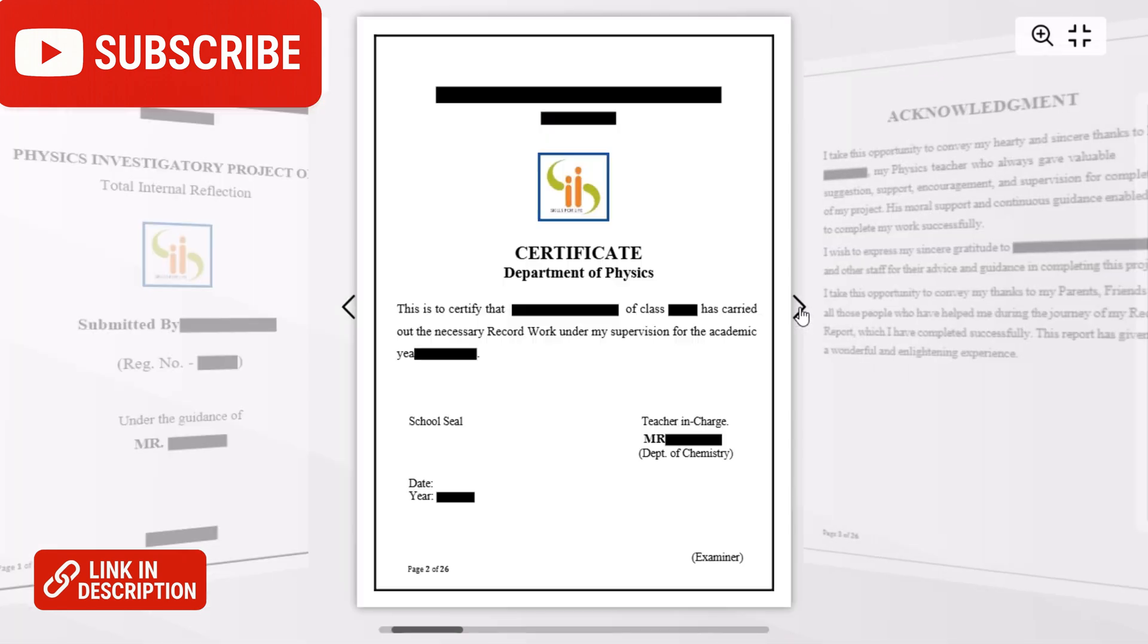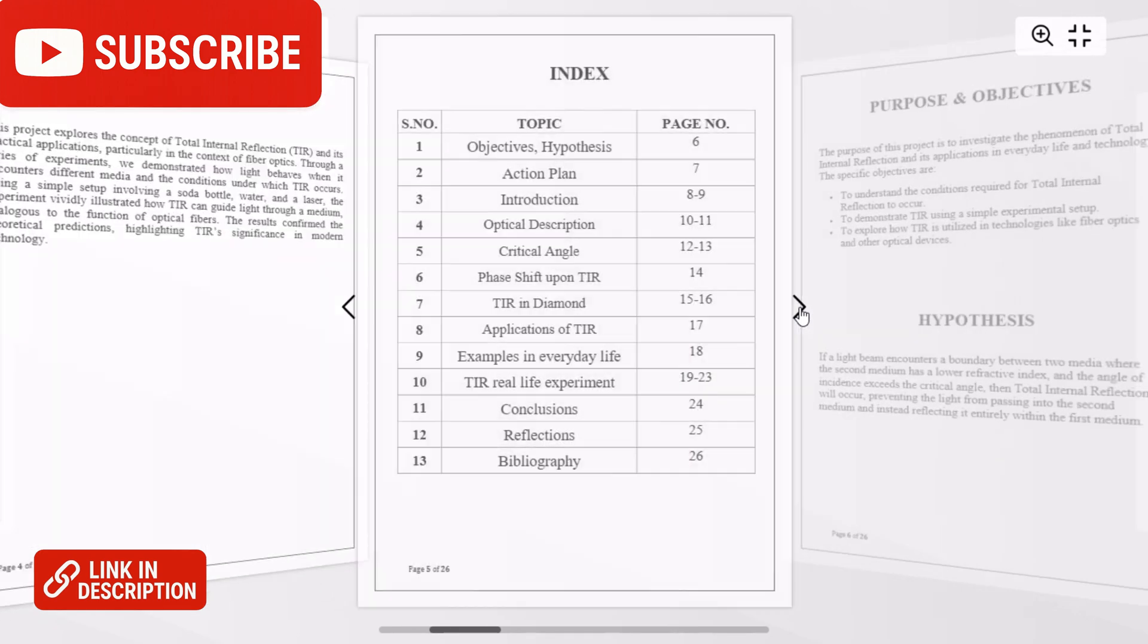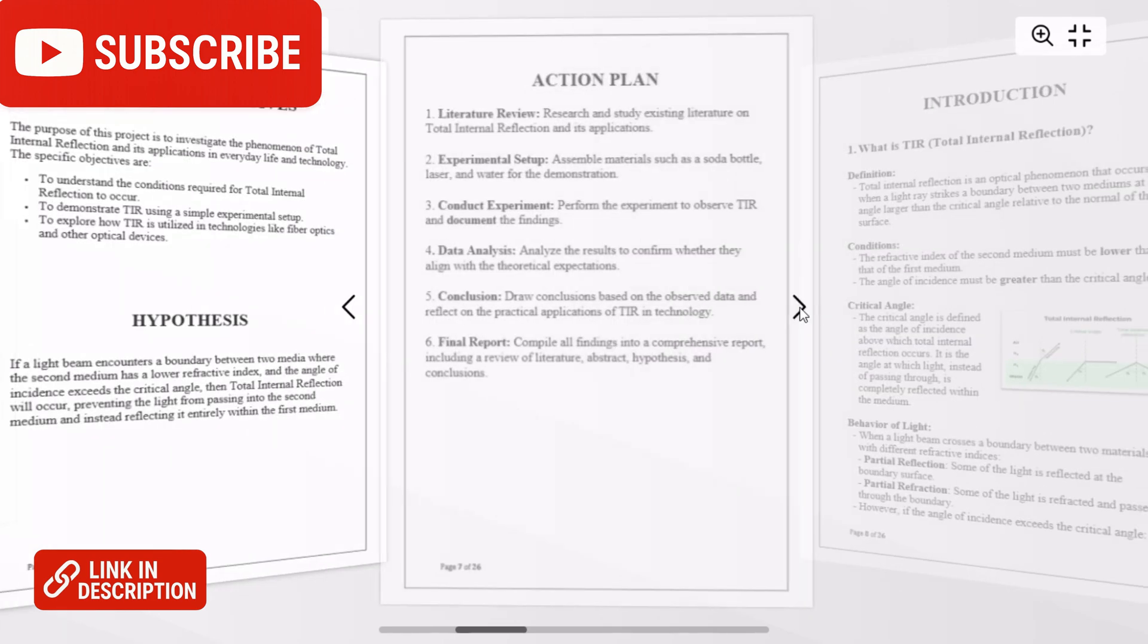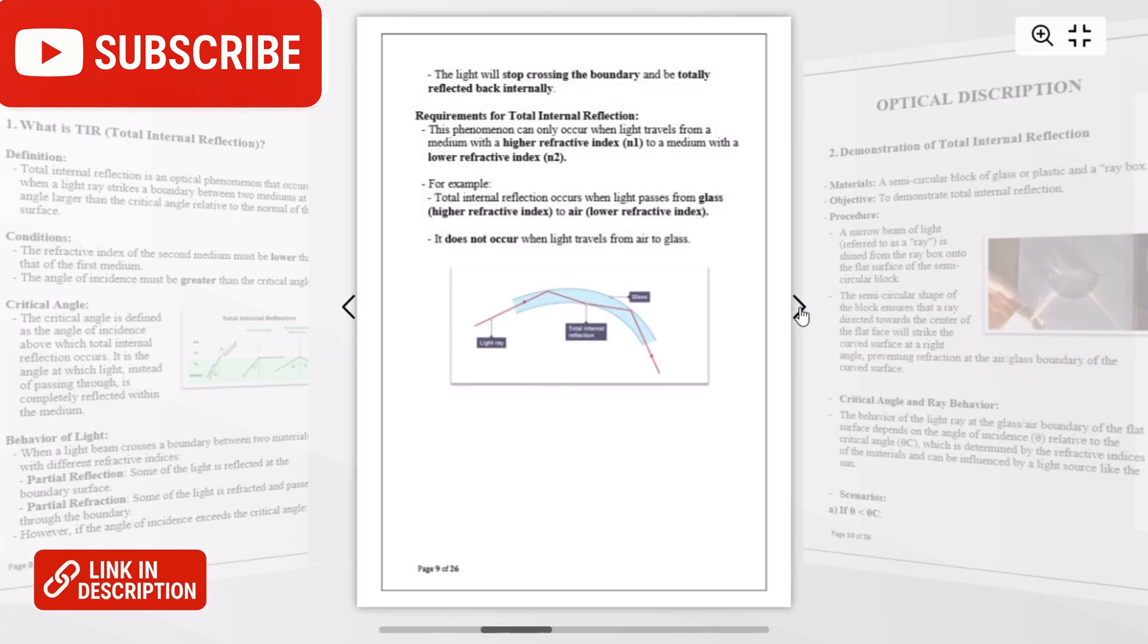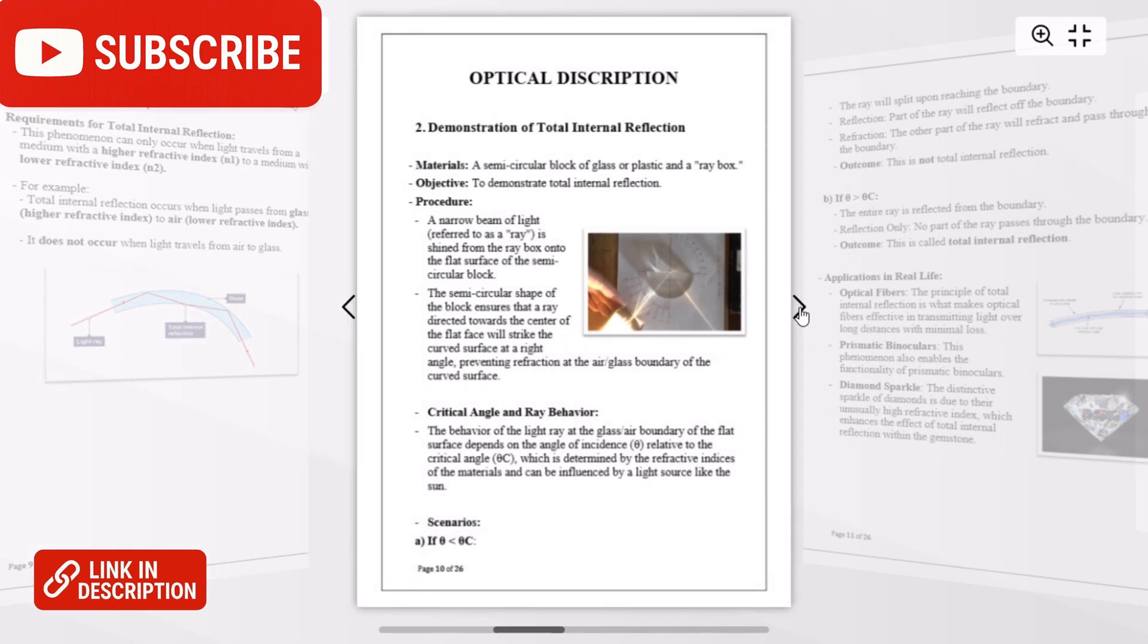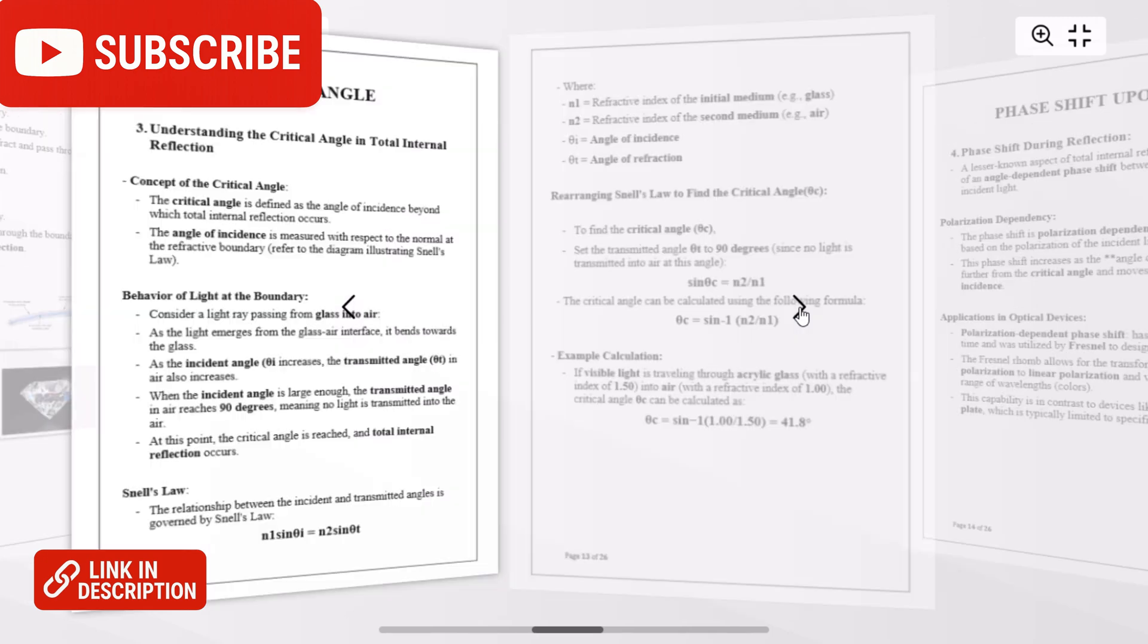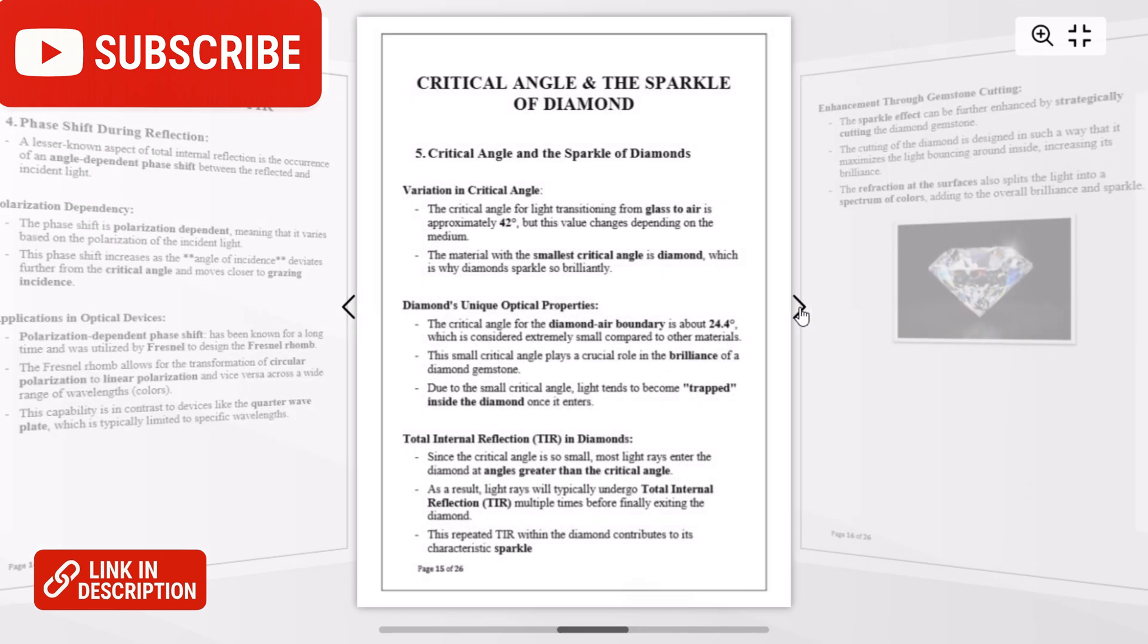First we have the certificate, acknowledgement, abstract, index, purpose and objectives, hypothesis, action plan, introduction, what is TIR, optical description, the demonstration of TIR, critical angle, understanding the critical angle and total internal reflection, phase shift upon TIR, critical angle and the sparkle of a diamond.